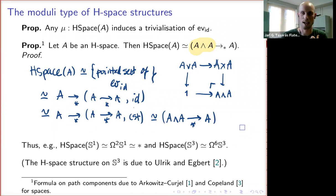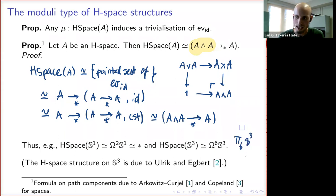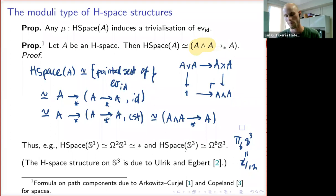As an application of this formula, the type of H-space structures on S1 is the two-fold loop space of S1, which is contractible — so there's a unique one. The type of H-space structures on S3 is the six-fold loop space of S3. Pi_6(S3) is well known classically to be Z mod 12, so we expect 12 components of this type — meaning up to homotopy, 12 different H-space structures on S3.